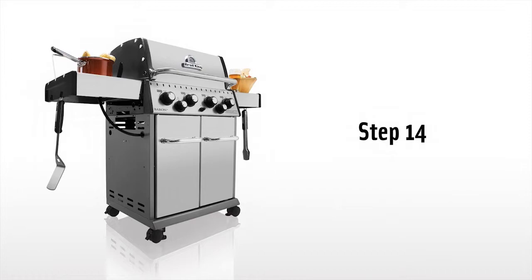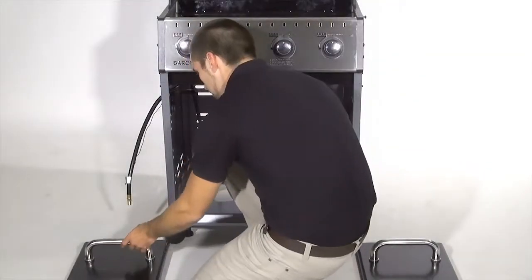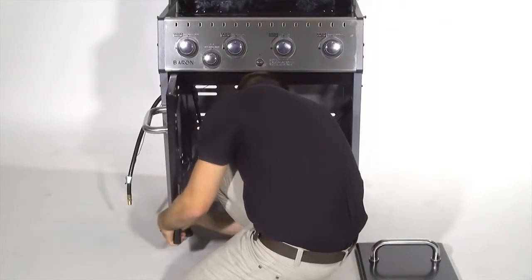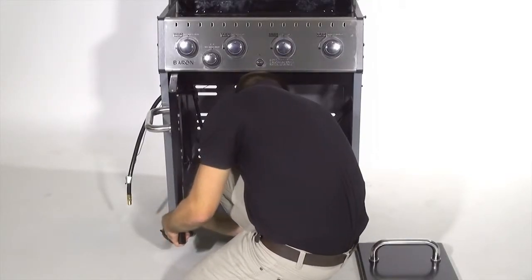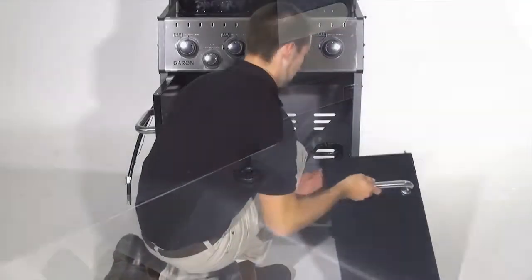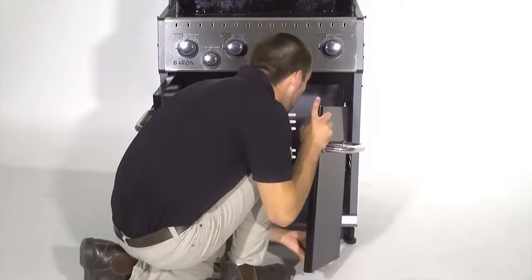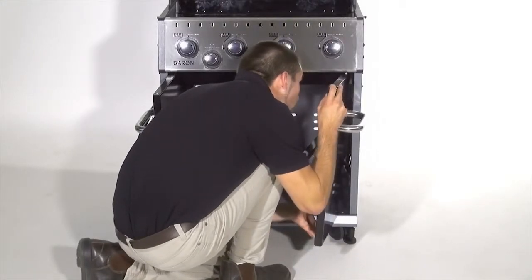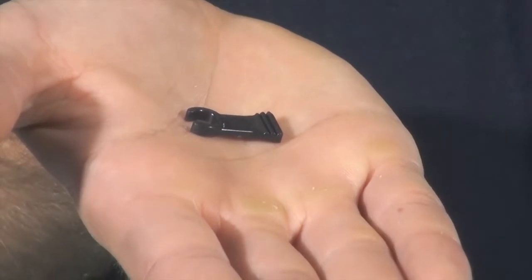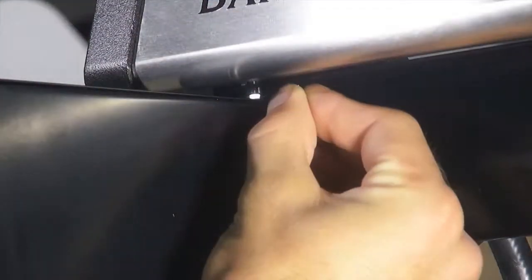Step 14. Install the doors on your barbecue grill. Start by inserting the upper door pin into each opening and then bring the bottom pin into place. Secure the doors using the retainer clips on the upper door posts.